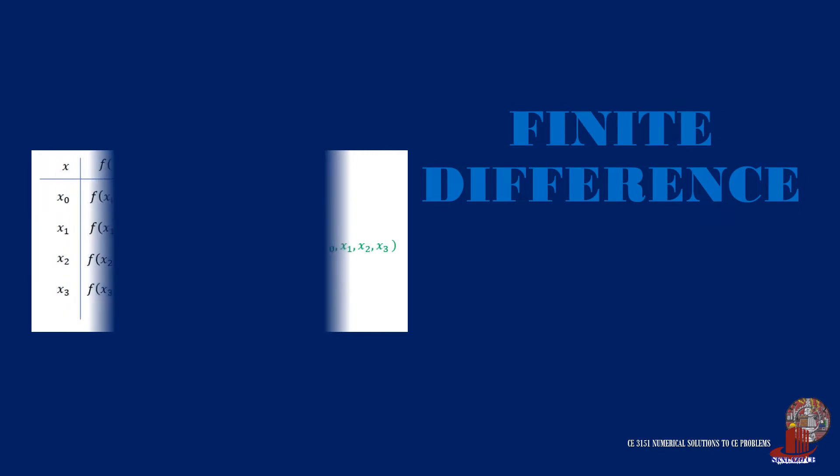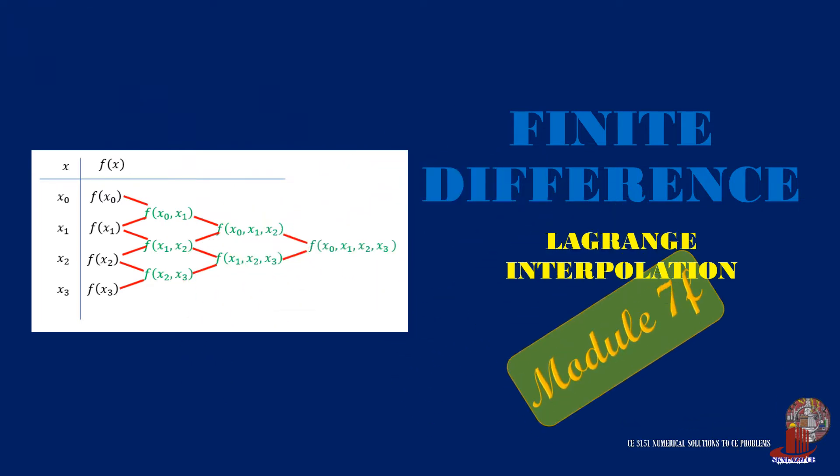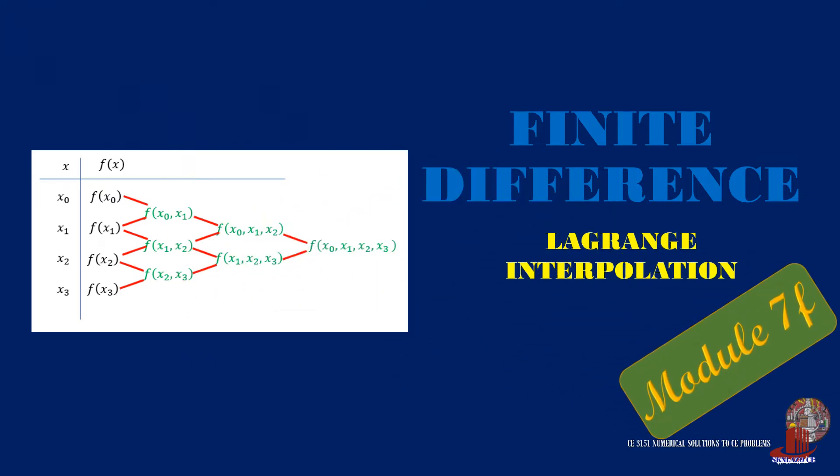Most interpolation methods on both regular and irregular x-intervals use difference tables which can be confusing, especially with divided difference tables. The method of Lagrange's interpolation is quite unique as it only utilizes the data points to arrive at the answer. Learn about it here in Numerical Solutions to CE Problems.